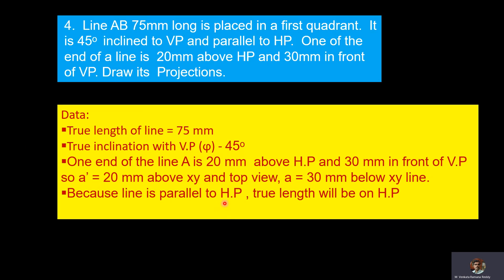Because the line is parallel to HP, true length will be on HP. Because the line is inclined to VP, on VP it will be reduced in length.